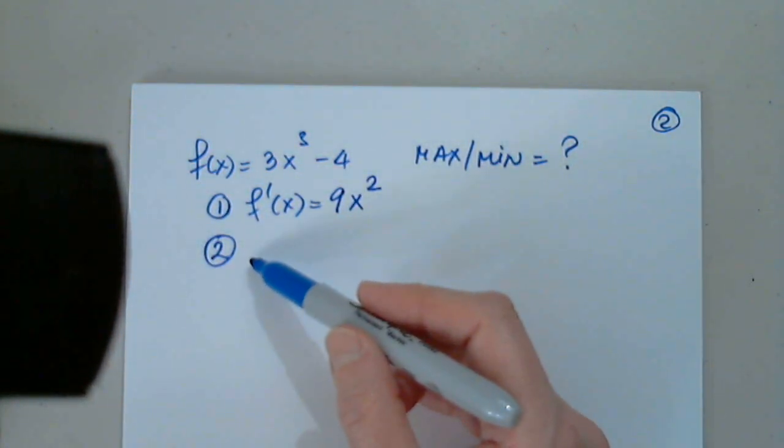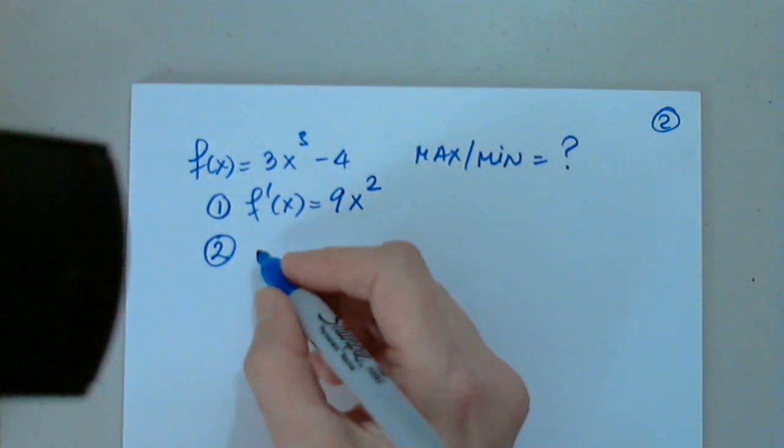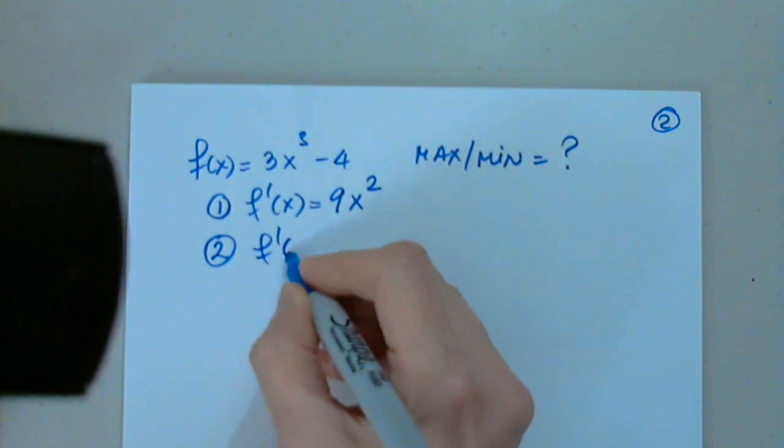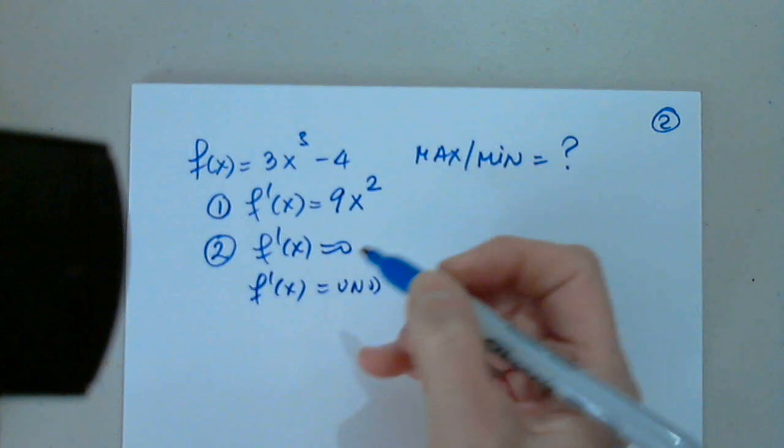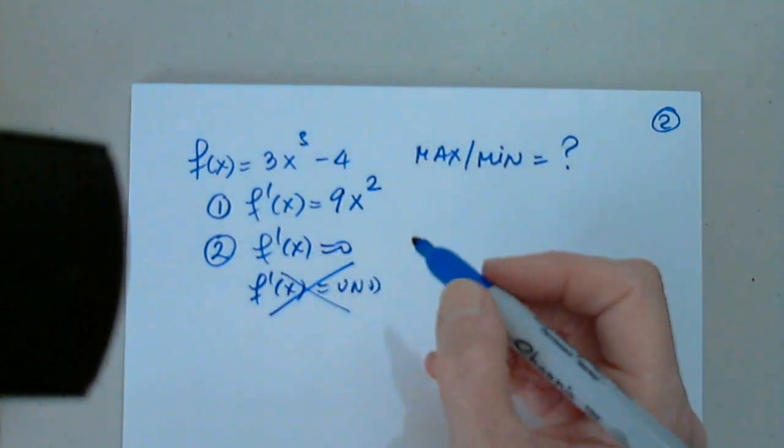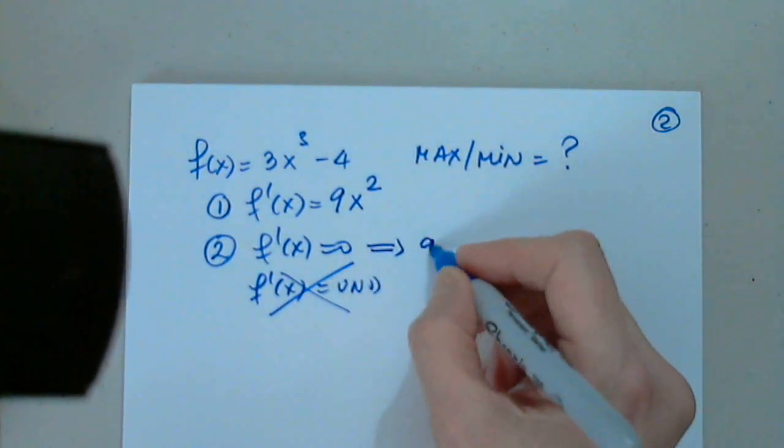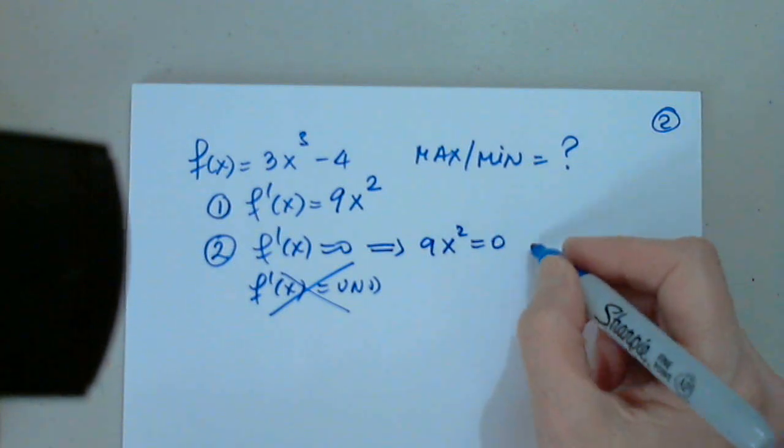What will be the second step? Set the derivative equal to 0. Very good. It's a polynomial function. That's not possible. So setting this equal to 0, what do we get?